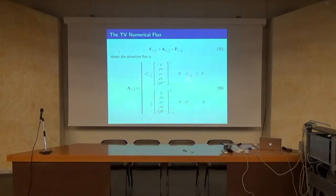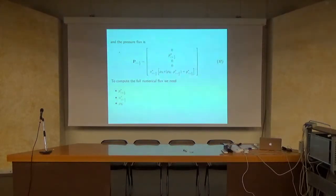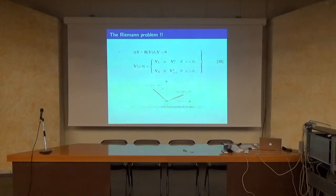For the pressure flux, it involves the equation of state and has only two non-zero components. The problem that is left is to compute estimates for the pressure, the normal velocity, and the density. Actually, the density is already determined—it's either the data on the left or the data on the right. We began with the flux vector splitting method and came back to the Riemann problem. We couldn't escape it.